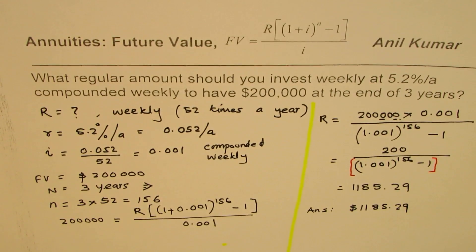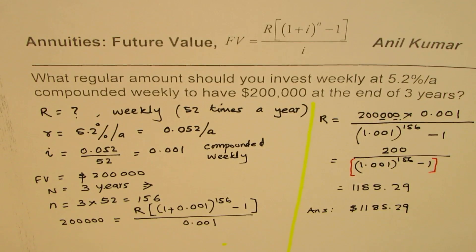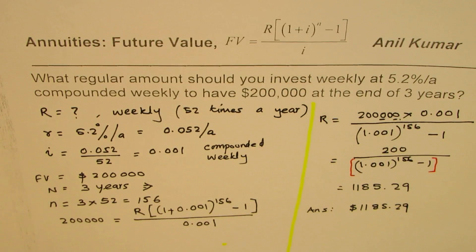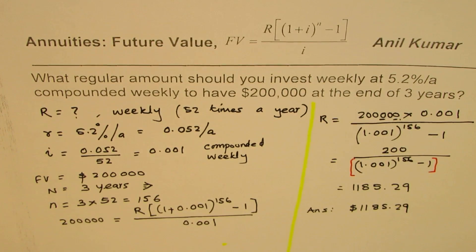So I hope you understand and appreciate the steps. In this question, if you want to find regular amount, you have to do reverse calculation. Rearrange your formula and then find it out. I hope that helps. Thank you and all the best.